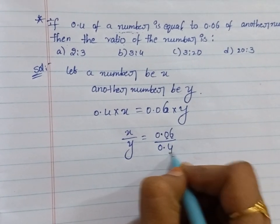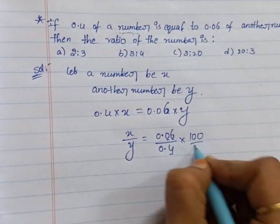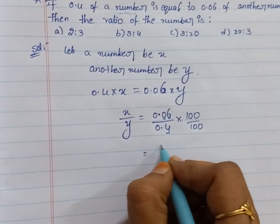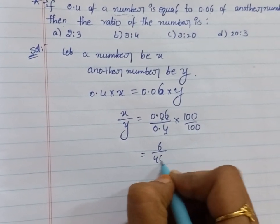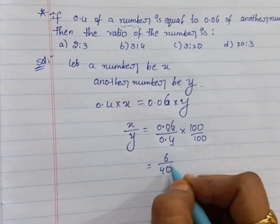After decimal point 2 digits, after decimal point 1 digit. Multiply by 100 over 100. Then 6 divided by 40. The two table goes in the numerator and denominator.